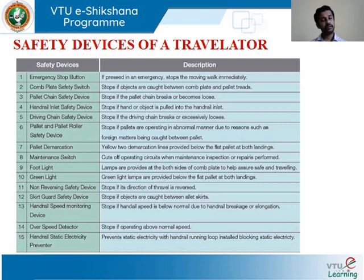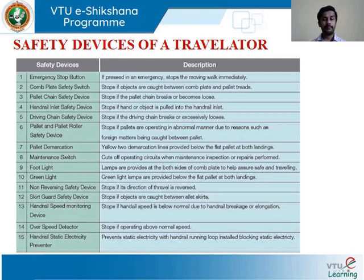The safety devices are also similar to an escalator. These include an emergency stop button, a comb plate safety switch, handrail slots, and safety devices for the chains. There are demarcations written on the pallets so that you can identify the gap and joint between two pallets and step on carefully. There is also a maintenance switch to stop the machine during servicing, foot lights for late evenings, and a skirt guide so that you don't place your foot too close to the chain movement.